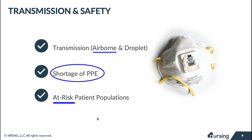Initially, there was concern that coronavirus disproportionately affected geriatric patients, but we've found it affects younger patients as well. Certain comorbidities and age make patients more susceptible to severe or long-term effects, but a healthy immune system does not make anyone immune. We all need to practice social distancing in our personal lives and protect ourselves at work.